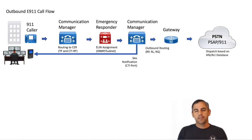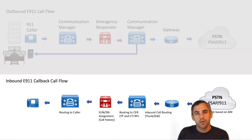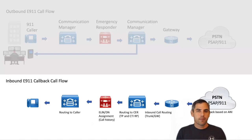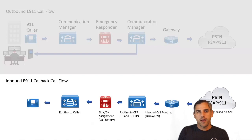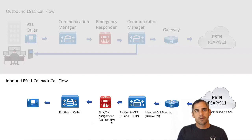The third requirement is providing callback information — something people sometimes forget. The PSAP must have the ability to call back in the event the caller passes out or their phone loses connection. CER along with Communications Manager handles this. CER caches the call history, knows which directory number placed the 911 call, and is able to route a callback to that directory number for a certain period of time.